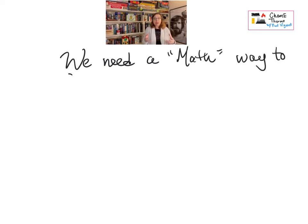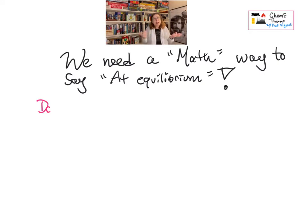So we need a way mathematically to say to an equation of state, hello, equation of state. I want to know the point at which this substance changes phase at a given pressure, for example, or at a given temperature. So we need a math way to say that, though, because we can't talk to equations of state. They don't talk to us. That's not how it works.